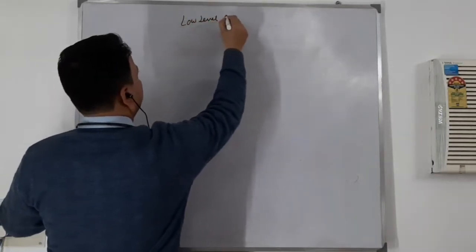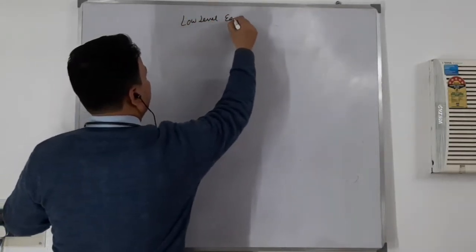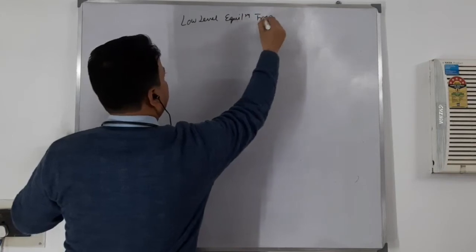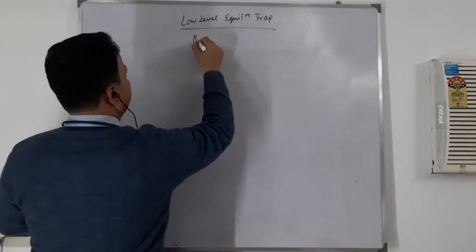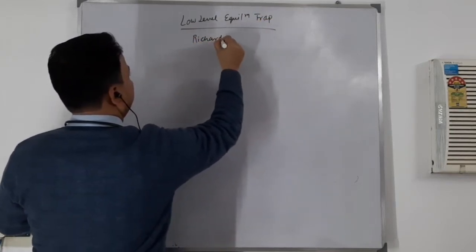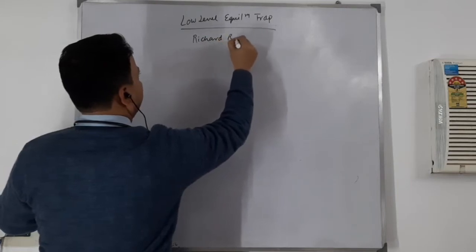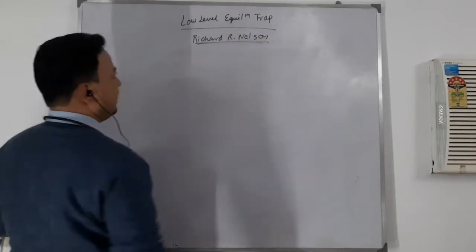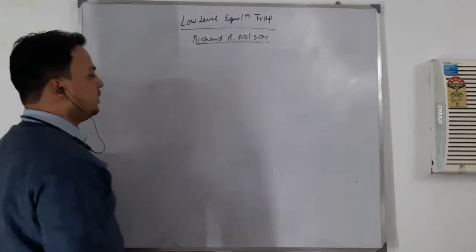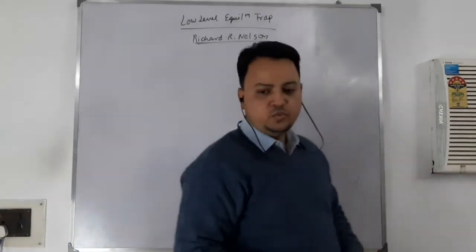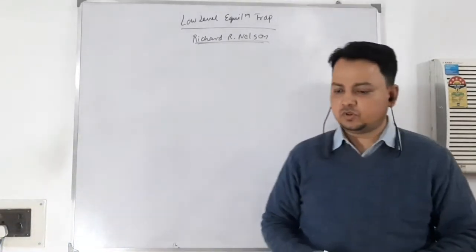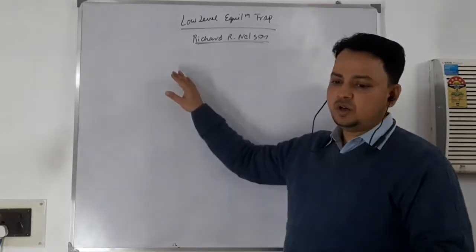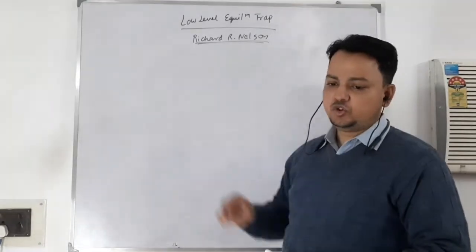The Low-Level Equilibrium Trap is given by Richard R. Nelson. He wrote a paper in 1956 where he talks about the Low-Level Equilibrium Trap. His theory is based on the Malthusian theory of population.